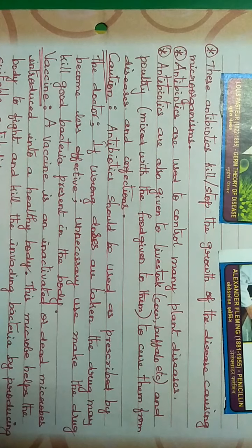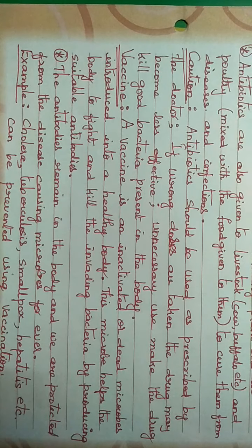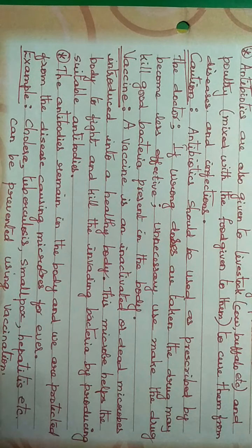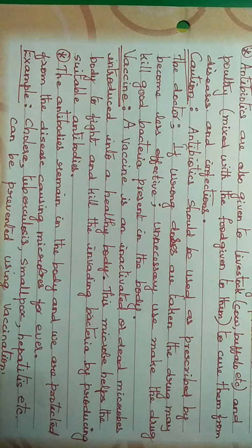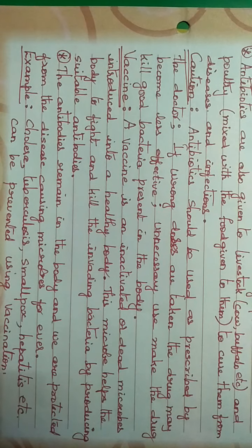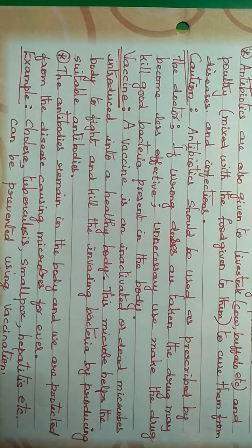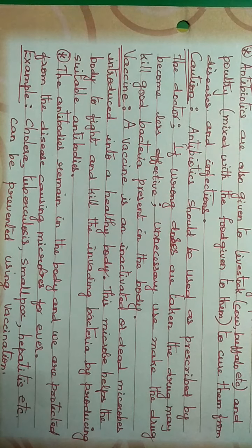A vaccine is an inactivated or dead microbe introduced into a healthy body. This microbe helps the body fight and kill invading bacteria by producing suitable antibodies. Our body also produces antibodies by itself to fight foreign bodies that enter it. When vaccines are given, they help produce and increase the number of antibodies so the patient recovers quickly.